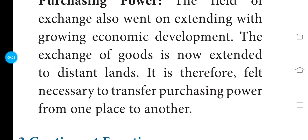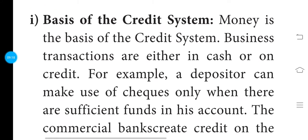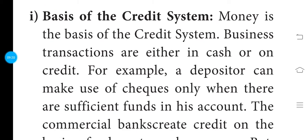Purchasing power is easy to transfer from one place to another place. Third one is contingent function. Contingent functions include: first, money is the basis of the credit system. Business transactions are either in cash or on credit.